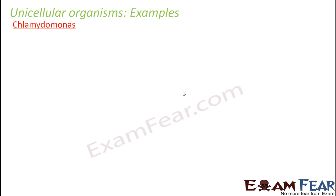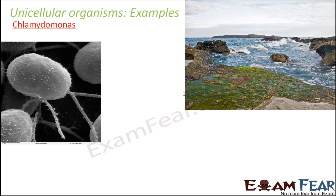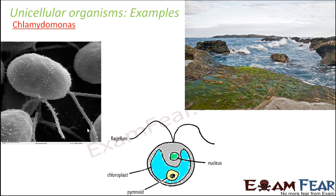Another example of a unicellular organism is chlamydomonas. This is also a microorganism and it is an algae. You would have often seen these kinds of algae on the surface of water bodies — when water gets a green-colored carpet on its surface, that is due to the formation of algae. Chlamydomonas is also unicellular, and if you look at it under a microscope, the entire structure you see is just one single cell.